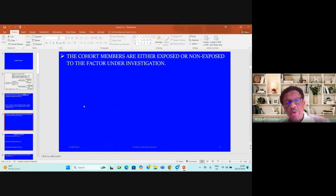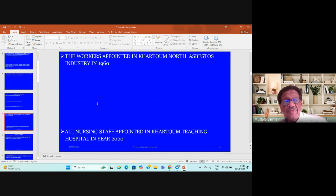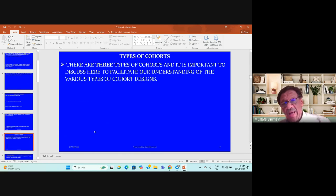Cohort members are either exposed or not exposed to the factor under investigation. Examples of cohorts include doctors graduated in 1996, female children born 1995, women married in 2000, workers appointed in Asbestos industry in 1960, or nursing staff appointed in Khartoum teaching hospital in 2000.